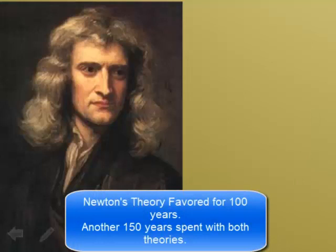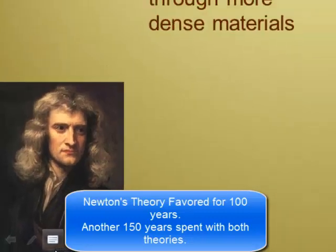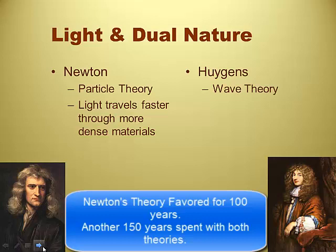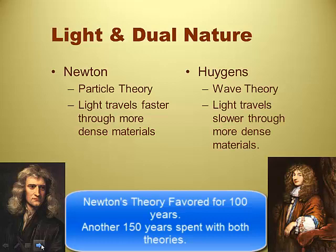So it turns out that Mr. Newton here comes up with a particle theory of light, and he figures that if light is a particle, that light is going to travel faster through more dense materials. So he's hypothesizing that light actually is pieces, particles of light, and that the pieces of light travel faster through more dense materials. And then we've got this guy, Huygens, who comes up with a wave theory of light. And Huygens says that light travels slower through more dense materials. So we've got the party split in two. Dueling scientists.